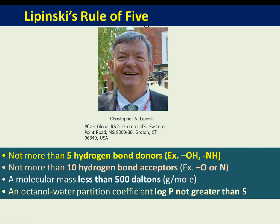Lipinski is a scientist working with Pfizer Global R&D. His Rule of Five states: not more than 5 hydrogen bond donors, not more than 10 hydrogen bond acceptors, molecular mass less than 500 Daltons, and a log P value not greater than 5. These rules were first prescribed to increase the success rate of drug discovery programs.